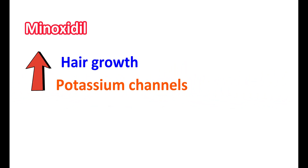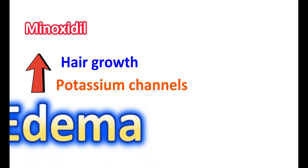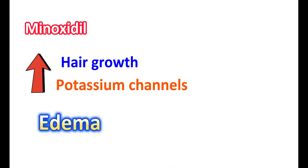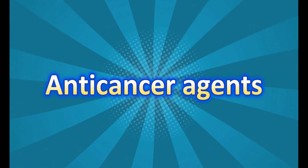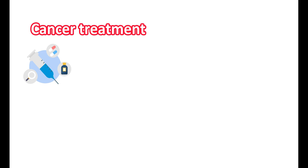Vasodilators can also cause peripheral edema. Minoxidil acts as a vasodilator; previously used to control hypertension, it is now only used topically to promote hair growth. It acts by opening potassium channels, producing hyperpolarization and vasodilation. Even when used topically, minoxidil can increase the risk of peripheral edema if it significantly reaches the systemic circulation. Hydralazine is another direct vasodilator used in the treatment of severe hypertension, given intravenously in hypertensive emergencies. Due to vasodilation, hydralazine can increase fluid retention and capillary permeability, resulting in swelling of the legs and ankles.